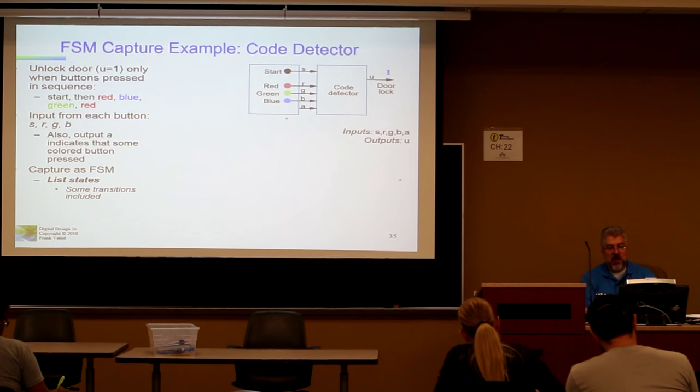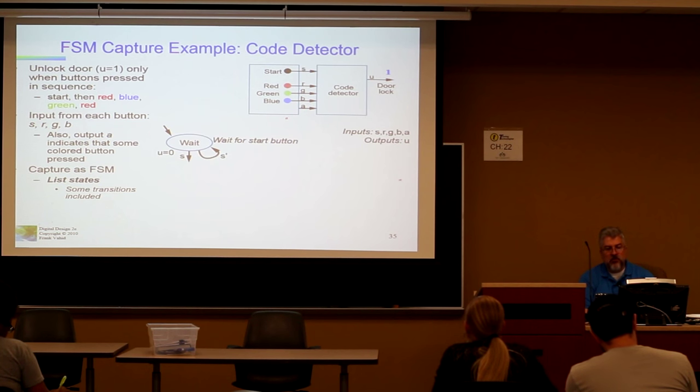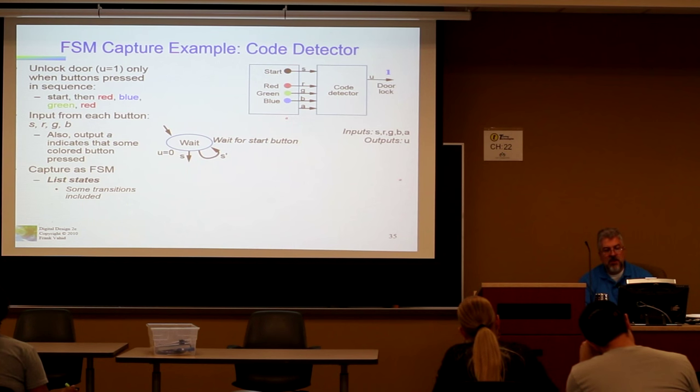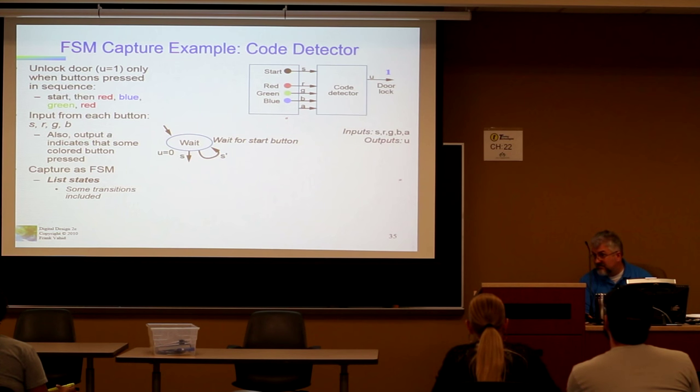So let's look at the states. And this is the important thing to note is that when we do a state, we're going to sit there in the wait state until you press the button that says S, start, all right? Now what will cause that transition from wait to something else? What else other than S? Remember this is a finite state machine, sequential logic, the clock, all right?